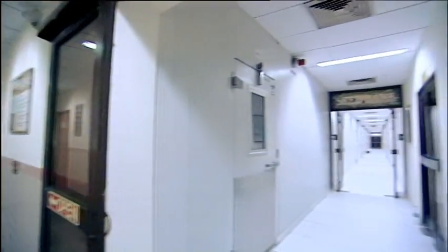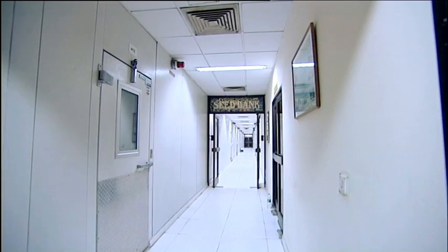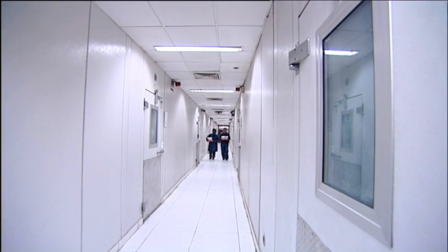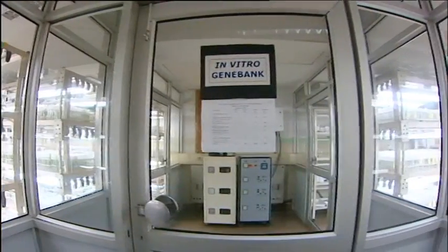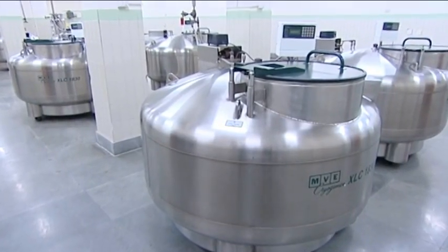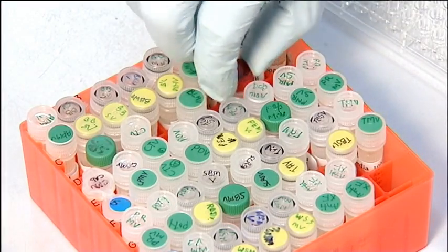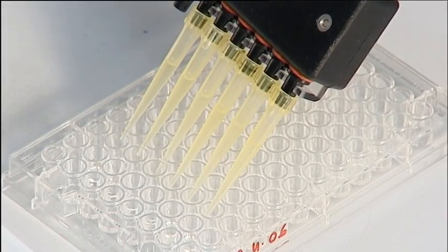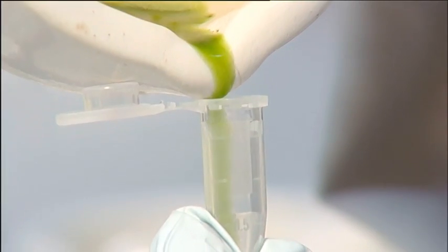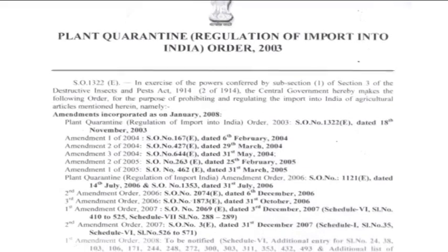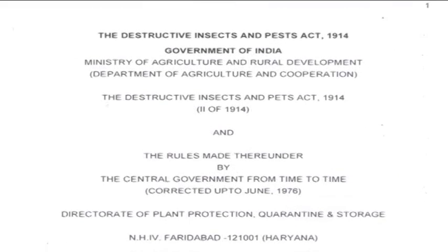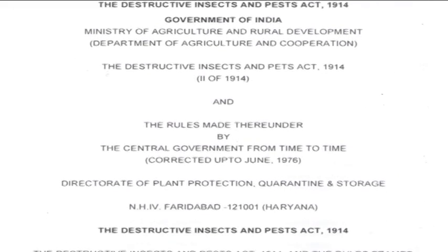NBPGR has a unique facility, the National Gene Bank, which is among the largest facilities in the world. This comprises the seed gene bank, in vitro gene bank and cryo gene bank. Another important responsibility assigned to NBPGR is to carry out quarantine of all the germplasm including transgenics and trial material imported into India for research purposes as a legal requirement under the Plant Quarantine Order 2003 under the Destructive Insects and Pests Act of 1914.